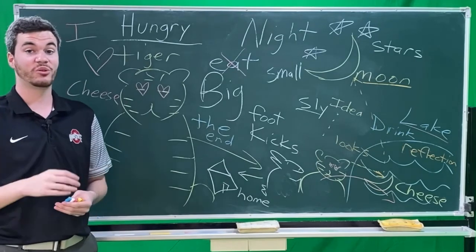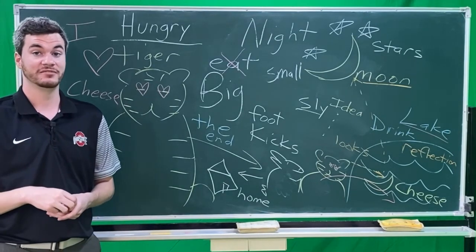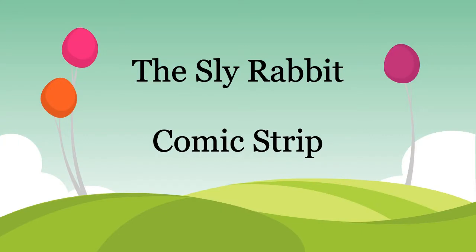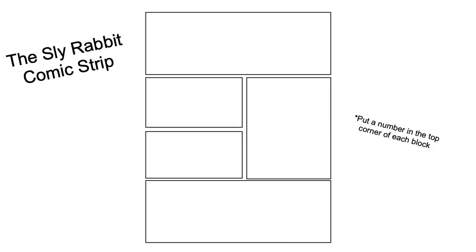I hope you enjoyed today's story, The Sly Rabbit. Next, we will be doing an activity. Today's activity, we are going to take the story, The Sly Rabbit, and we are going to make a comic strip. Teachers, in the description below this video, there is a file that you can print out for your students. The file looks just like this. It is perfect for making a comic strip. Students, when you have your comic strip, be sure to put a number in the top corner of each block before you get started. Once you have your blocks numbered, we can get started making our comic strip.